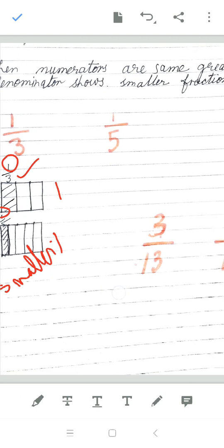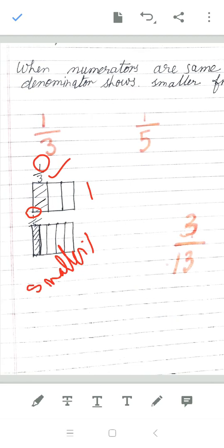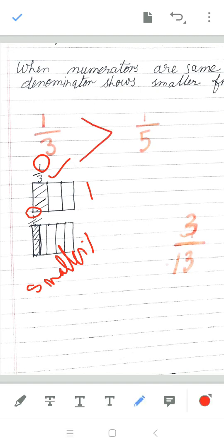Just have a look here. 1 upon 3, 1 upon 5. Now numerators are same. Smaller denominator shows the greater fraction. So which is greater, this is greater. Now let us see the next one.